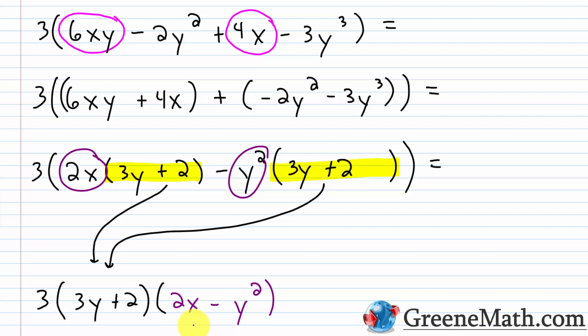If you didn't pull out the 3 to start, when you reach the final stage you'd still have a common factor of 3 that needs to be pulled out. So always look before you start: is there anything I can pull out before factoring by grouping? It's going to save you additional factoring in the end.